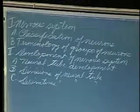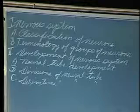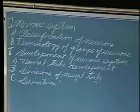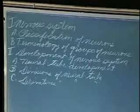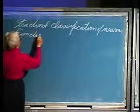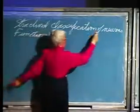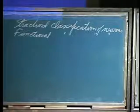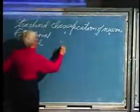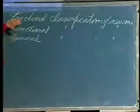Let's start this morning with our classification of neurons. We have a structural classification, a functional classification, and a chemical classification. You can use any of them when you're talking about neurons. So let's begin with our structural classification.